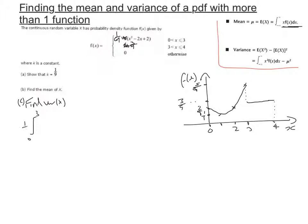For the first part we've got the integral between 0 and 3. I'm going to take a ninth out straight away, and I'm going to multiply each term by x. When I multiply x squared by x, I get x cubed minus 2x squared plus 2x.